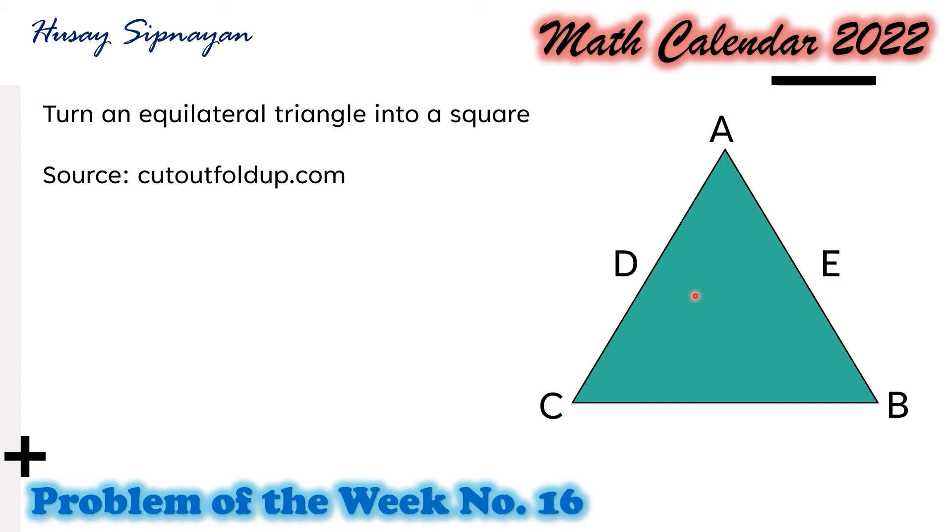Points D and E are the midpoints of two sides of equilateral triangle ABC such that D is the midpoint of AC and E is the midpoint of side AB. We draw a segment from E to side BC and call it point H.